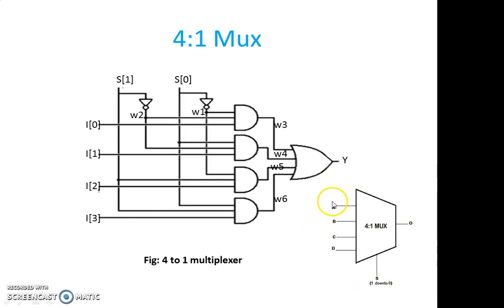Based on that select line option, it is going to take the input to the output. If your select line is 0,0, it is going to take A. If it is 0,1, it is going to take B input to output. If it is 1,0, it is going to take C input to output. If it is 1,1, it is going to take D input to output. If you see the internal structure of this 4 to 1 mux, it looks like this.